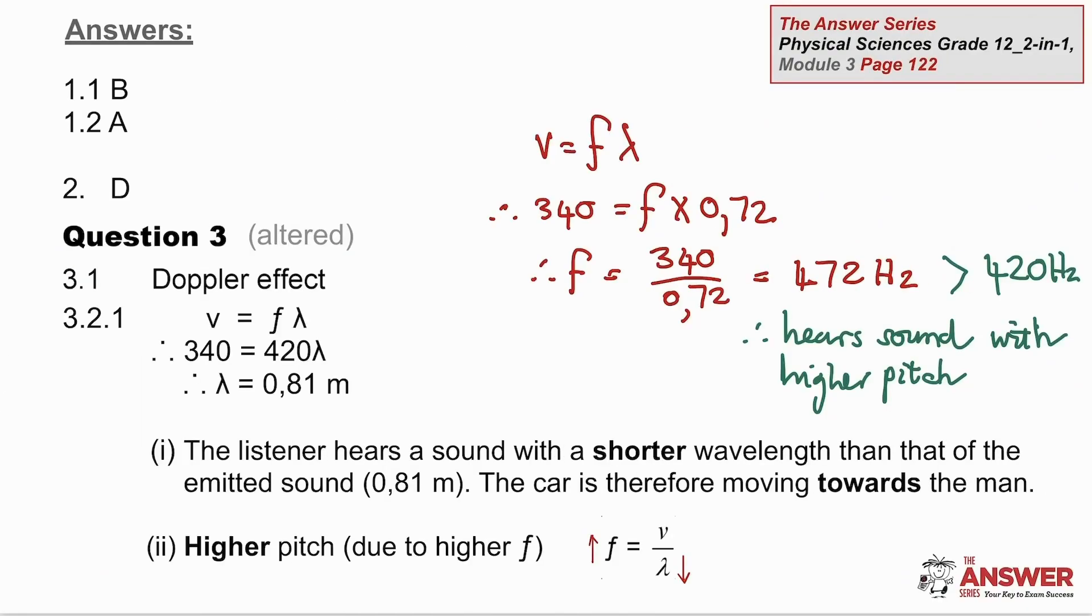Here are the model answers for you to compare to your answers. In question 3.2.1, you can use the wave equation in two different ways. If you use the speed of sound and the given frequency, then you find out that the wavelength is 0.81 meters, which is longer than the 0.72 meters that is heard.